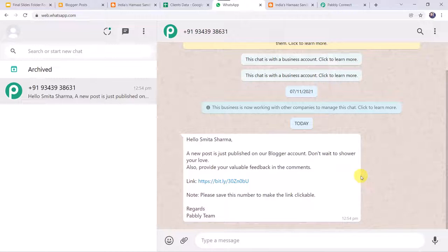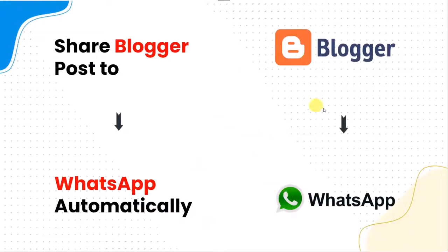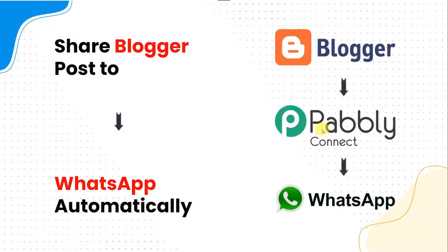This was made possible through automation and integration using Pabbly Connect. Pabbly Connect is an automation and integration software that integrates Blogger with WhatsApp automatically, without requiring any coding skills or programming knowledge — even a non-technical person can use it easily. Pabbly Connect captures all the details from the new post and automatically sends a message to your clients' WhatsApp numbers. Let's learn the integration process now.